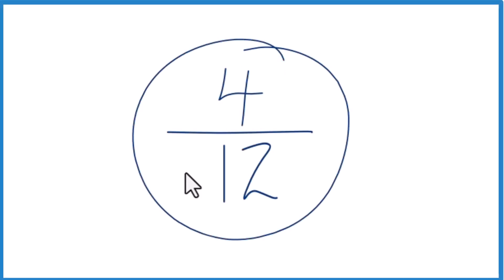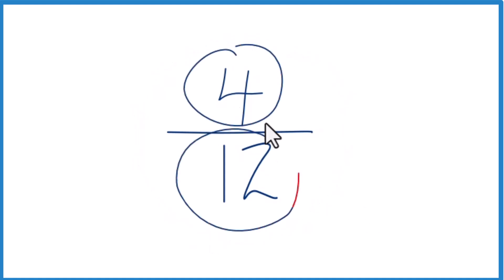Let's write the fraction 4 twelfths as a decimal. So we know that 4 is smaller than 12, so when we divide 4 by 12, we're going to get a number less than 1. That's a good starting place.